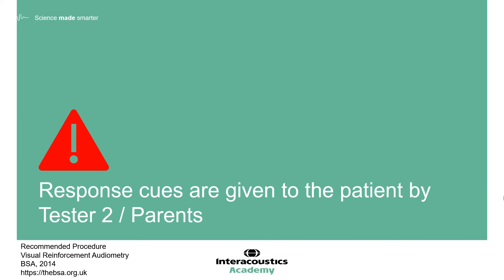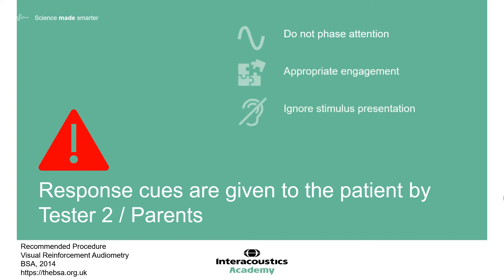The second tester must be aware of how they play and interact with the child. Phasing their attention to a slow or complete stop at the same time as the stimulus presentation occurs risks cueing the child and recording a false positive response. Maintaining appropriate engagement throughout testing is essential. The second tester must ignore the stimulus presentation and keep up their play. The head turn response of an engaged child is a reliable response. Cues can also be provided by the parents, so they should be instructed appropriately, and both testers should remain alert to any potential cues.